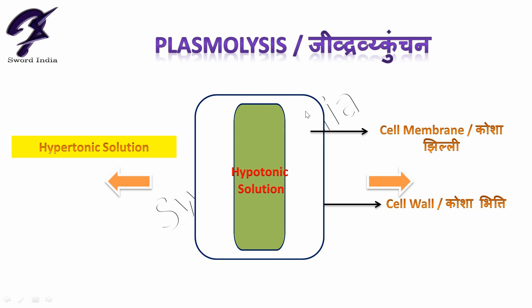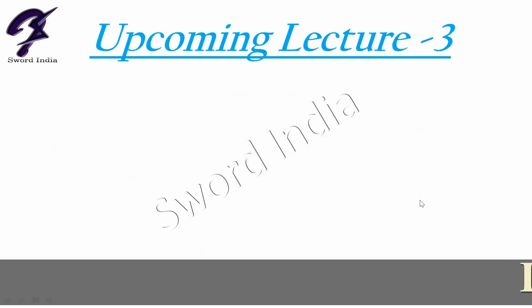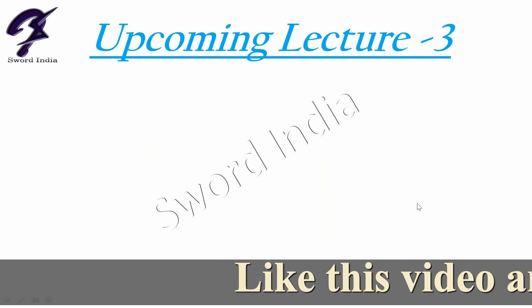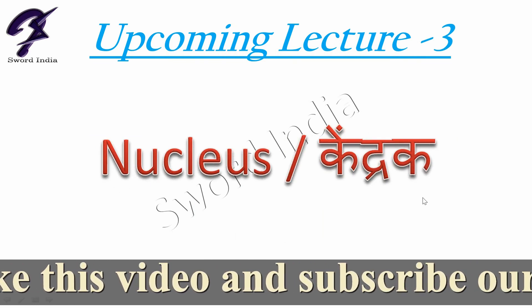But this will have no effect on the shape or size of the plant cell, because as we studied, the cell wall is rigid and remains intact — it protects the shape and size of the cell. But the protoplasm shrinks away from the cell wall in the middle, and this phenomenon is called plasmolysis. In the next lecture, we will talk about the nucleus.